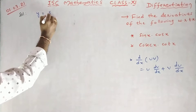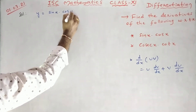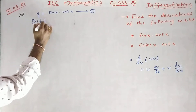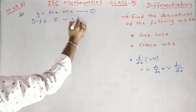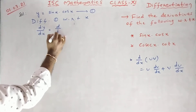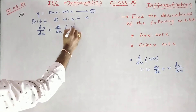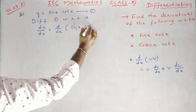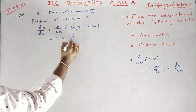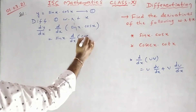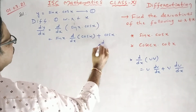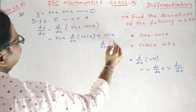y is equal to sin x into cos x. Differentiating with respect to x, dy/dx equal to d/dx of sin x into cos x. First function into derivative of second function, plus second function into derivative of first function.